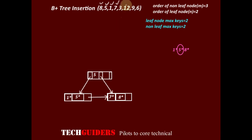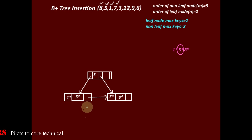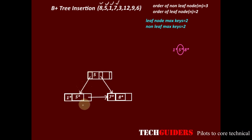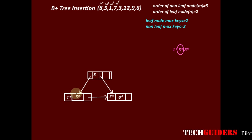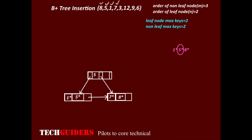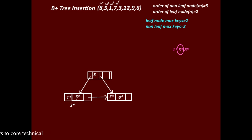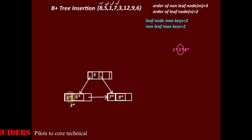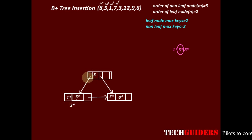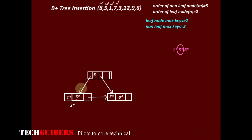Next, we insert 3. Starting from the root, 3 is less than 5, so we follow the left pointer and reach the left leaf node. Key 3 should be inserted between 1 and 5, but this leaf node can hold only a maximum of 2 key-data pointer pairs. The node is full, so an overflow will occur if we try to insert 3. We must split this node by considering all entries including the new entry in sorted order and finding the mid entry, which is 3. The key 3 should be pushed to the parent.